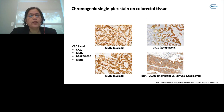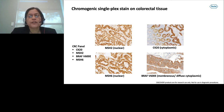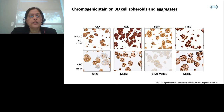Here is an example of chromogenic single-plex staining on colorectal tissue. You can see nuclear staining of MSH2 and MSH6, cytoplasmic staining of CK20, and diffuse membrane and cytoplasmic staining of BRAF V600E. We tested each biomarker on 3D FFPE sections, including CK7, ALK, EGFR, and TTF1 on H2228 spheroids, and CK20, MSH2, BRAF V600E, and MSH6 on HT29 spheroids.